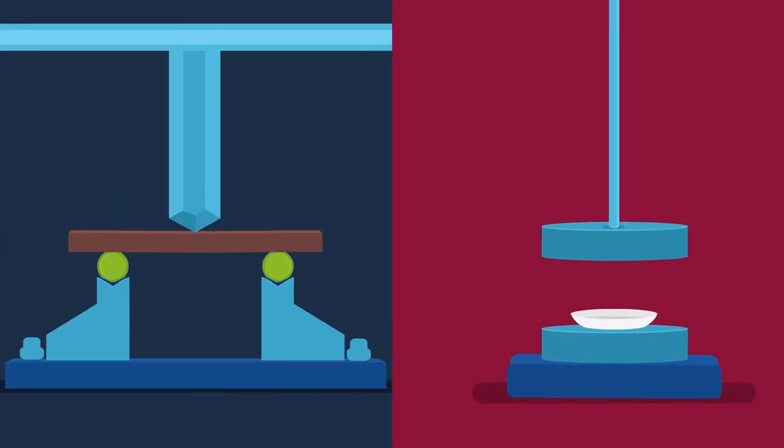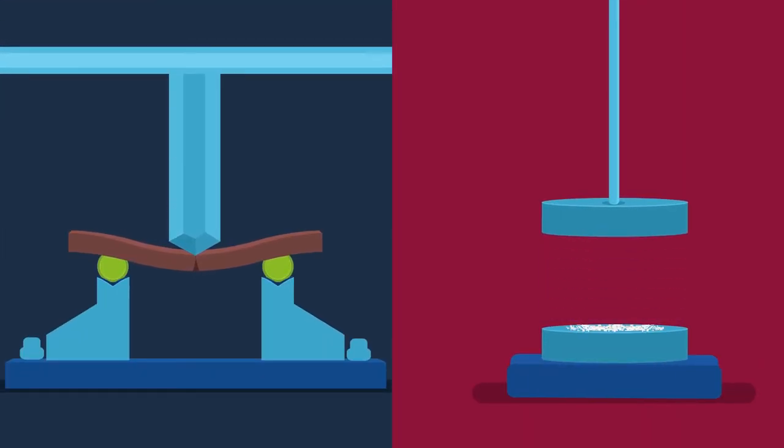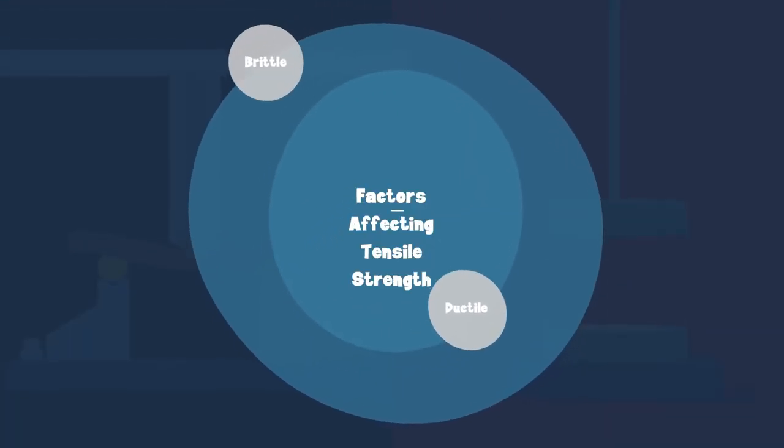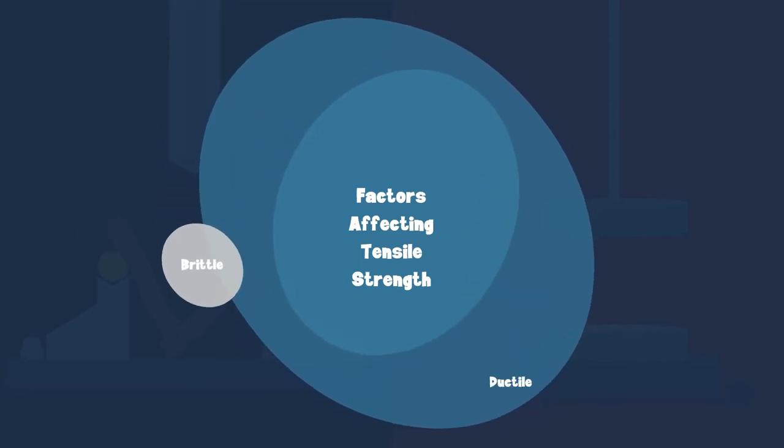Similarly, every material or substance will have the resistance to break at one point. But how it gets affected scientifically? By the brittleness and ductility of the material.